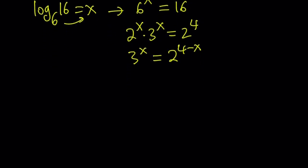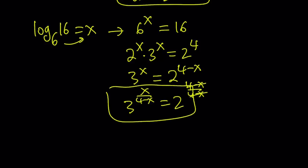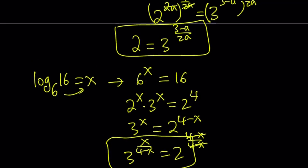Let's do the same thing here. I can raise both sides to the power 1/(4-X). In other words, divide the exponents by 4-X, and this is just going to be 2^(4-X)/(4-X), which is 2^1, which is 2. Great. We've got another equation for 2, and both of these are equal to 2.